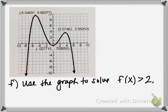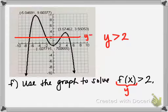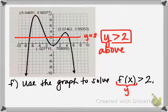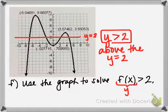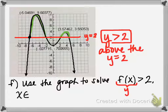Part f: use the graph to solve f(x) > 2. Since f(x) is the same as y, we're asking what parts of the graph have y values greater than 2. I like to draw a horizontal line at y equals 2. That's where y values equal 2, and we're interested in the portion of the graph above that line. I'll shade in the parts of the graph above y equals 2 — we have a piece here and another piece there. So my answer consists of x intervals for two portions of the graph where y values are greater than 2.